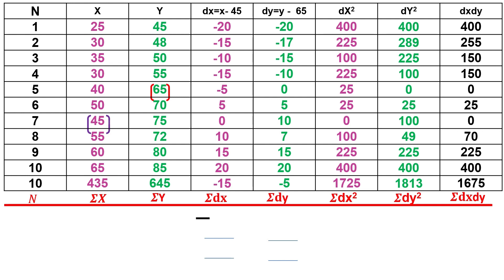Sigma dx equals minus 15. Adding all negative values: minus 20, minus 15, minus 10, minus 15, minus 5, total minus 65. Adding all positive values: 5, 10, 15, 20, total 50. So sigma dx equals minus 65 plus 50 equals minus 15.